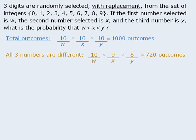Now of these 720 outcomes, how many are such that the three numbers are in ascending order? To answer this, let's consider one possible outcome where the first number selected is six, the next number is two, and the third number is seven. Notice that we can take these three different numbers and arrange them in three factorial or six different ways.